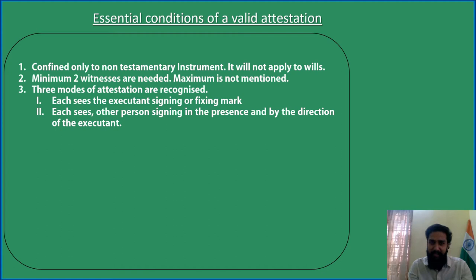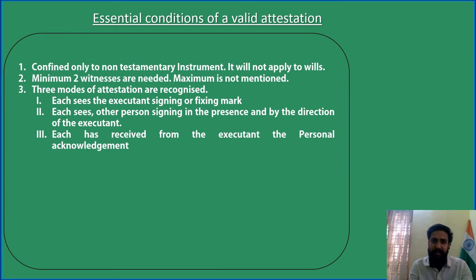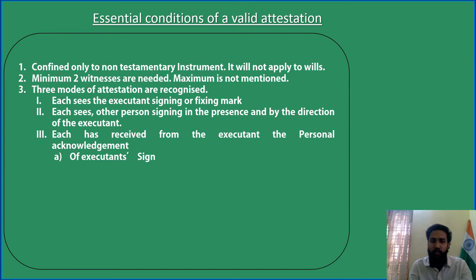The third mode is: each has received from the executant the personal acknowledgement. This is for situations when the actual owner cannot be present for the real transaction. The witness may receive his personal acknowledgement — acknowledging that he is ready to transfer his property. That is through his sign, the executant's sign — the owner of the property putting his signature through some authorized person, or through his seal. That is called the executant's mark or sign of one who signed for the executant.